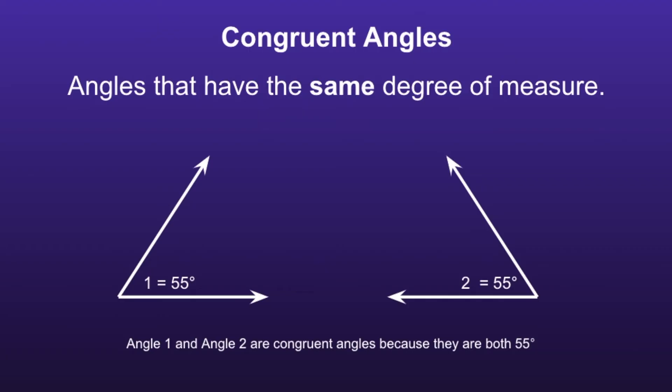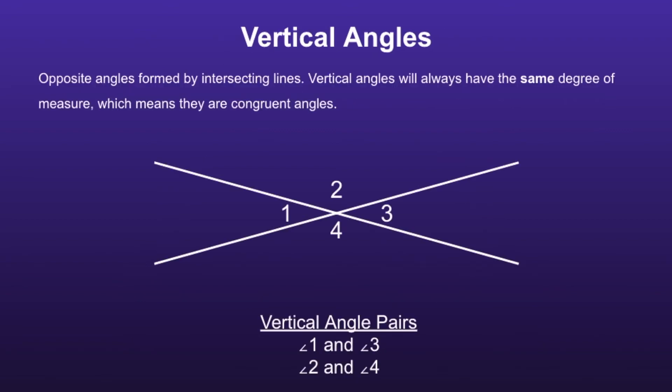Congruent angles are angles that have the same degree of measure. Angle 1 and angle 2 are congruent angles because they are both 55 degrees. Vertical angles are opposite angles formed by intersecting lines, and they will always have the same degree of measure, which means they are congruent angles.